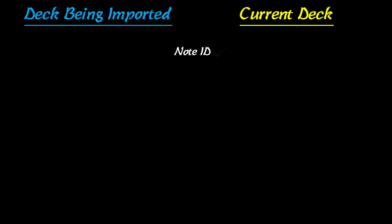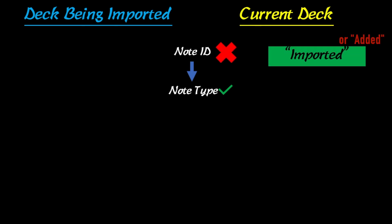Here's how it works: if you have a deck that you're importing and you have your current deck, Anki is first going to check the note ID. As long as the note ID matches it'll move on and check the note type, which also needs to match. If the note ID doesn't match, it's just going to say that it imported the cards because Anki sees them as a separate deck.